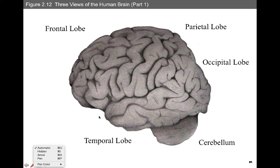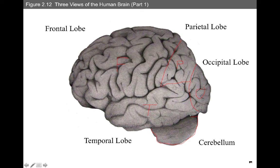Here are those lobes in a bit more detail. Frontal is up front, then parietal, occipital at the back, and finally the temporal. You can think of it like a mitten — the temporal lobe is like the thumb, T for temporal or thumb, F for frontal or fingers. Down here we have the cerebellum, which means 'little brain,' and is important for balance, movement, and proprioception — though it's not considered one of the lobes.